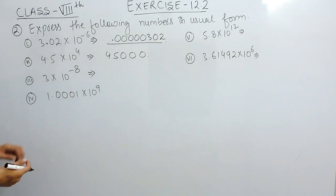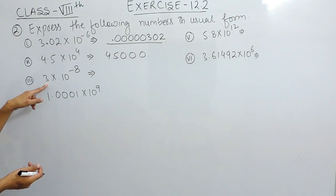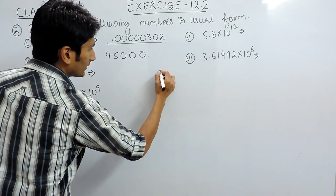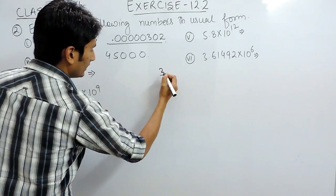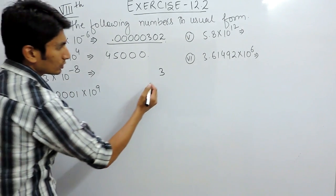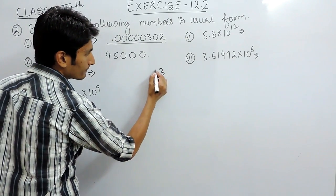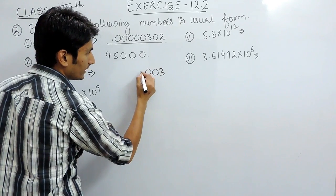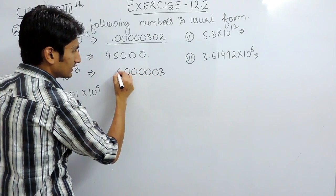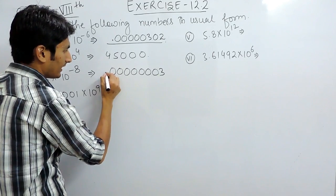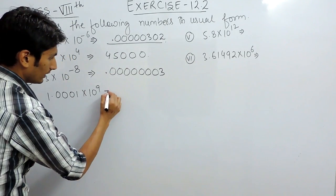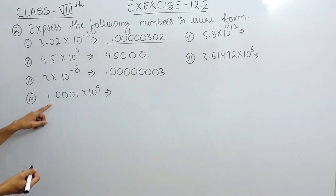In the third part, you have to convert this into the usual form. The power is minus 8, so you have to shift the decimal to the left-hand side till 8 digits. Counting: 1, 2, 3, 4, 5, 6, 7, 8 — and the answer would be this.